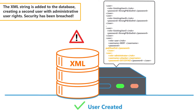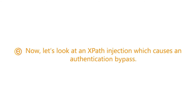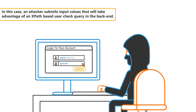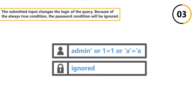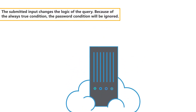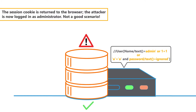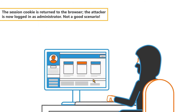Now, let's look at an XPath injection which causes an authentication bypass. In this case, an attacker submits input values that will take advantage of an XPath-based user check query in the backend. The submitted input changes the logic of the query. Because of the always-true condition, the password condition will be ignored. The vulnerability is exploited in order to gain control of an account without providing a valid password. The session cookie is returned to the browser. The attacker is now logged in as administrator.